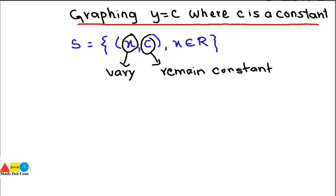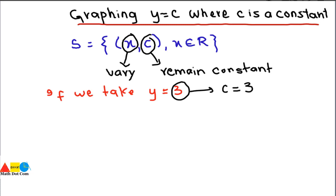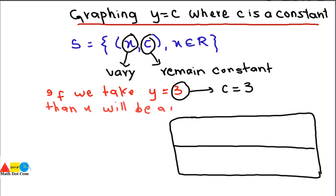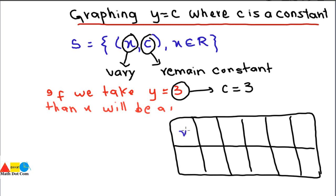In order to draw the graph, we can assume a certain value. Let's say y is equal to 3 — that means the value of c is 3, which is constant. The value of y is 3 for every value of x. Now let's draw a table to find the corresponding values. Here we have x and here we have y.